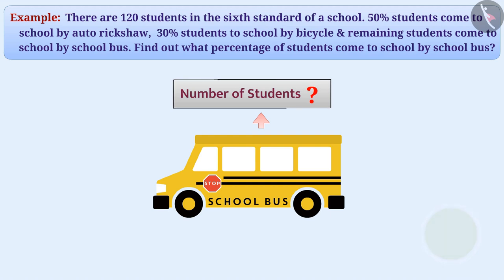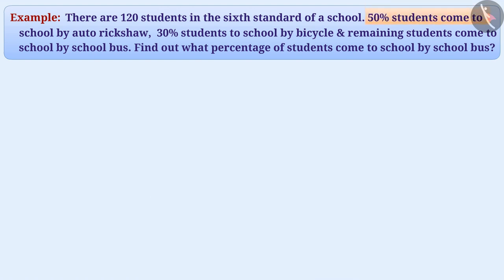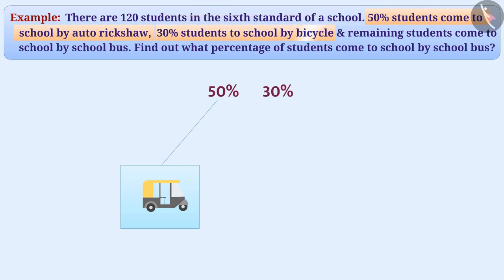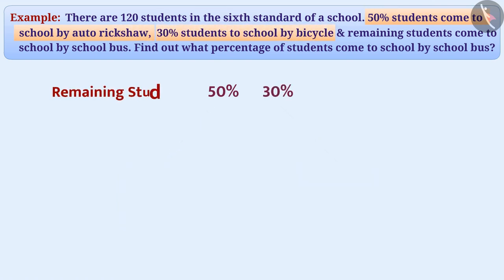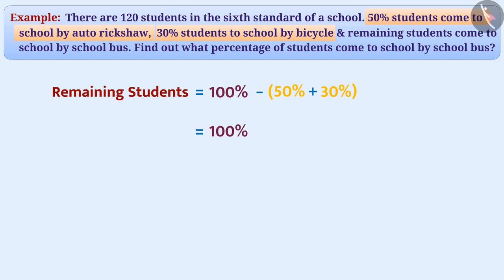We can find it by different methods. Here we can see that 50% of the students come to school by auto rickshaw, 30% of students come to school by bicycle, and the remaining students — that is 100% minus (50% plus 30%), which is equal to 100% minus 80% — is equal to 20% of students come to school by school bus.